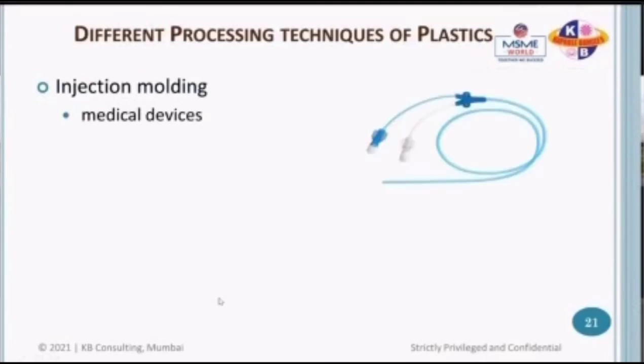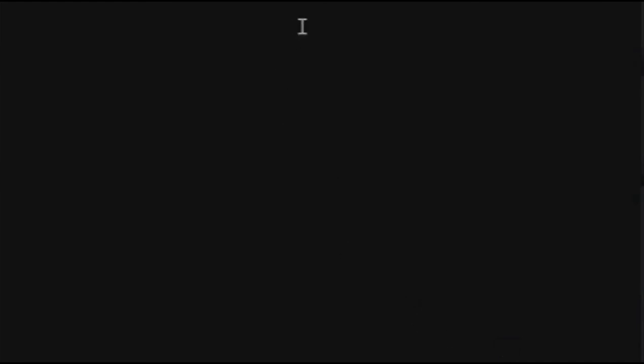Injection molding can be used to produce several different plastic items. If you go to a hospital, even the hospital bed — several items are made out of plastic. Medical devices like catheters, cancer drug delivery devices, syringes — everything is made out of plastic. Also kitchen storage items around the house, furniture — everything is injection molded. Car interiors and exteriors — several items are all injection molded. Now we're going to look at an injection molding video, which will show you how the process happens and how the machine looks. It's an animated video courtesy Sumitomo.